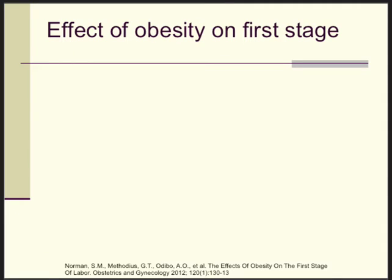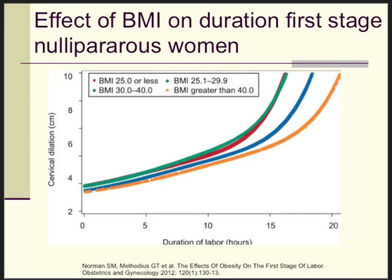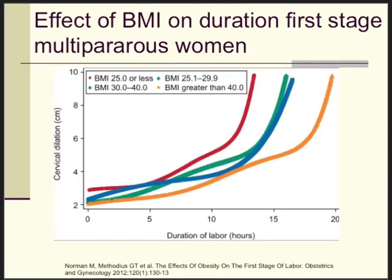Also interesting: as more pregnant women are overweight or obese, there is a clear association between BMI and labor duration. A BMI over 40 has a prolonged first stage compared to a BMI of 30-40 or compared to normal or overweight women. The same principles apply when looking at multiparous women — there is a clear link between BMI and the duration of the first stage.